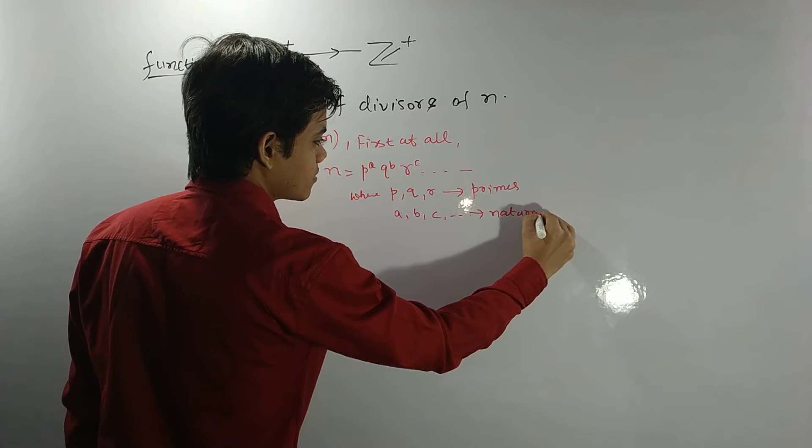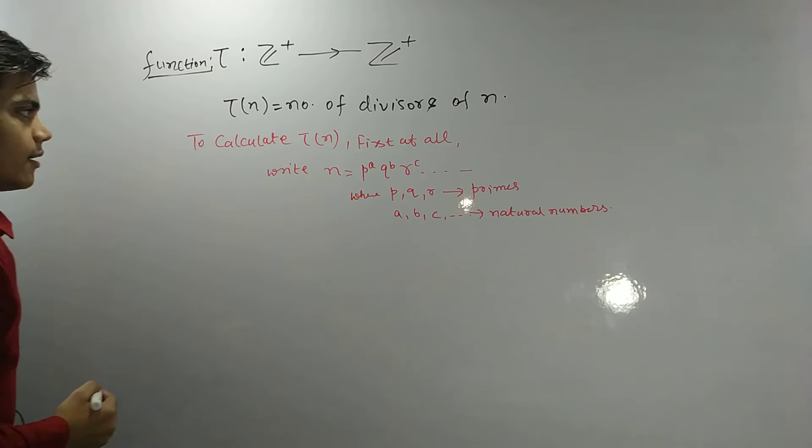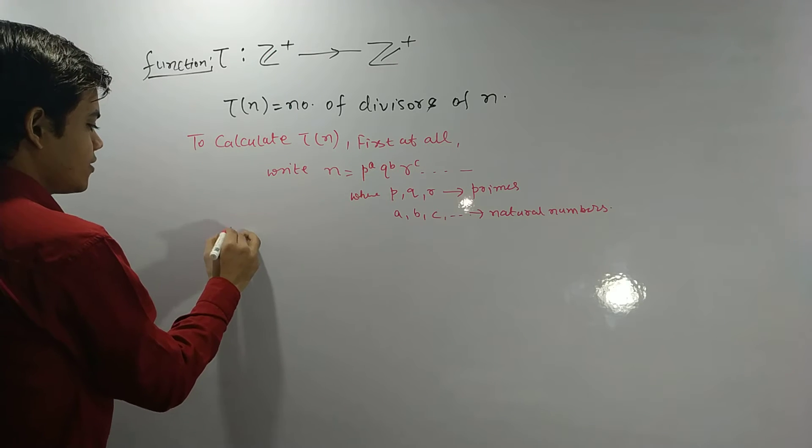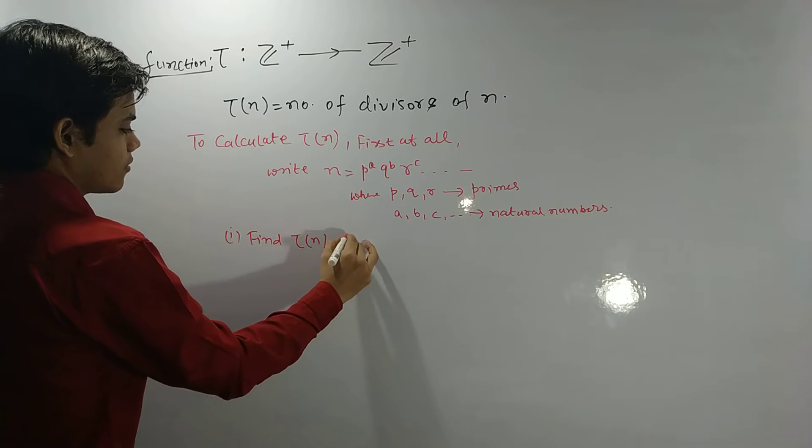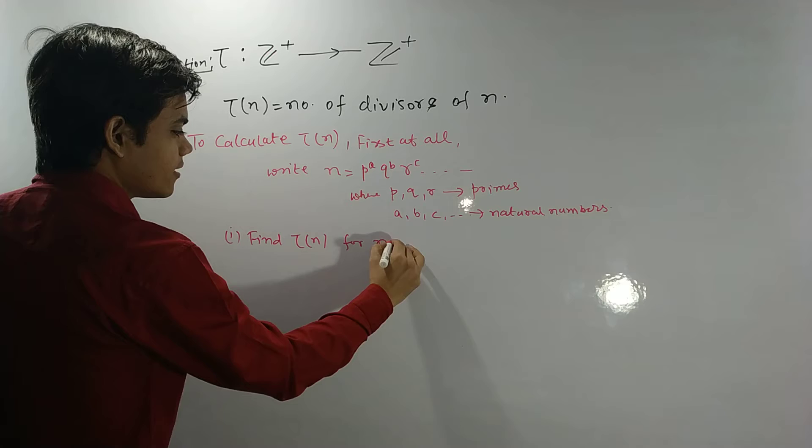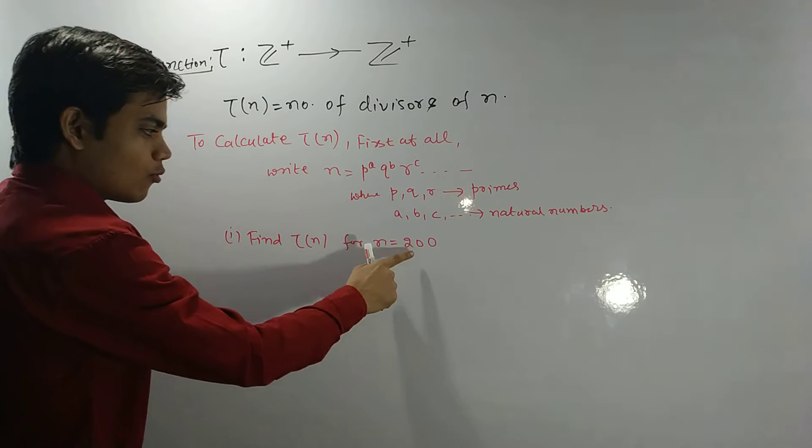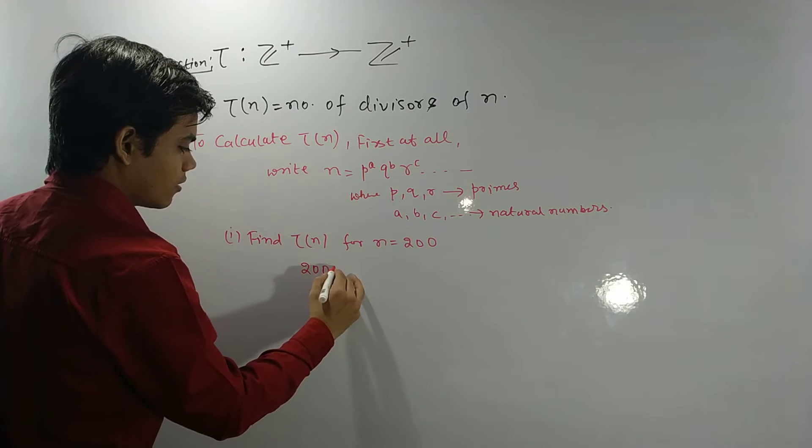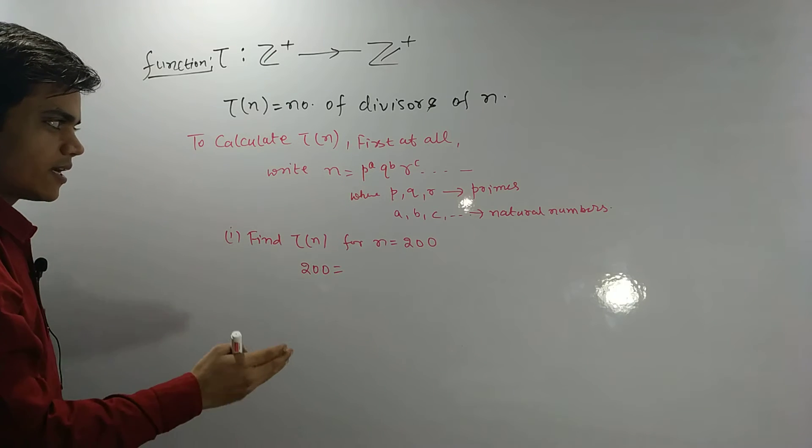So let me explain one example here. Find Tau(n) for n equals 200. So what is n here? 200. So first of all, you have to factorize this 200 as the product of prime or product of power of primes.